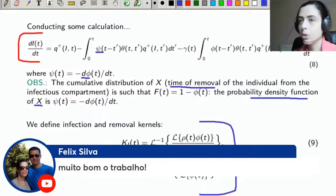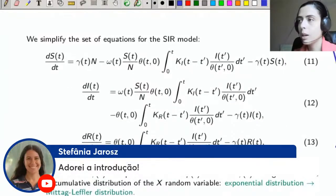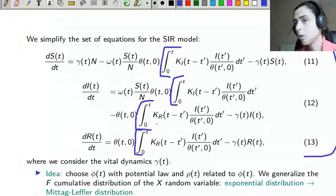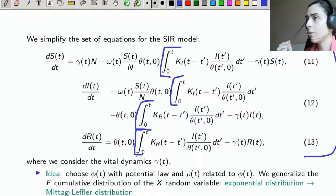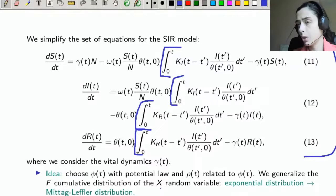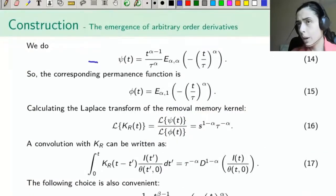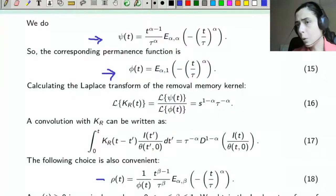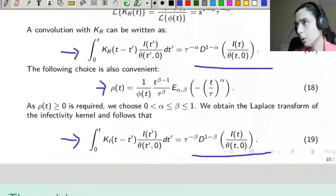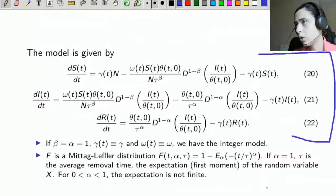If we define infection and removal kernels, we obtain a SIR model very similar to the general model proposed in 1927. The idea is that these convolutions be written as derivatives of arbitrary order. For this, we take the two functions dependent on time since infection — φ and ρ — and insert strategic functions based on Mittag-Leffler. In particular, the cumulative distribution of the random variable giving the removal time will generalize from an exponential to a Mittag-Leffler distribution. These choices of ψ, φ, and ρ make those convolutions be written as Riemann-Liouville derivatives, giving us a constructive model with derivatives of arbitrary order.